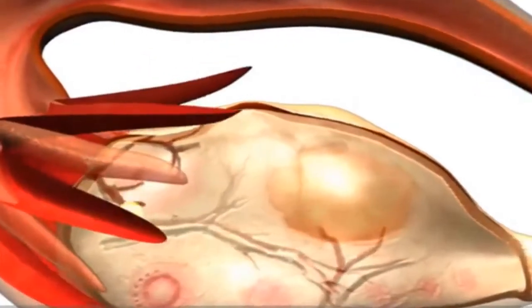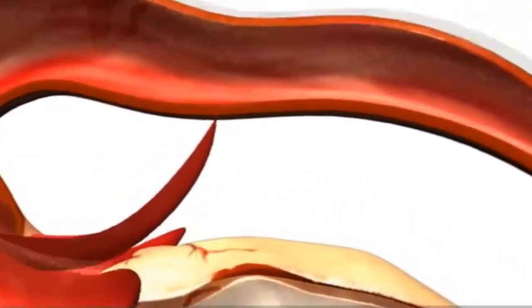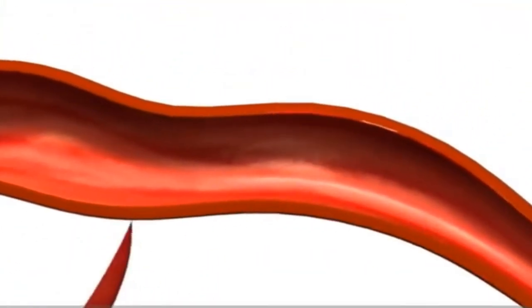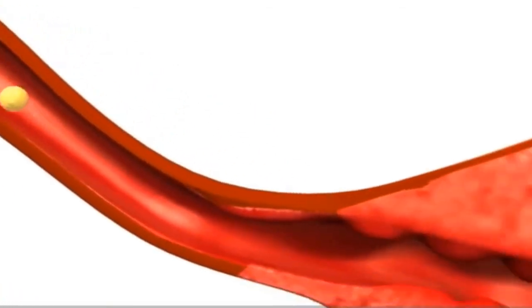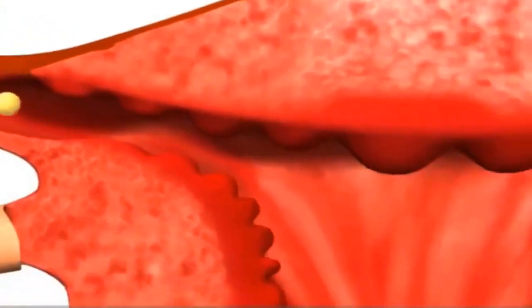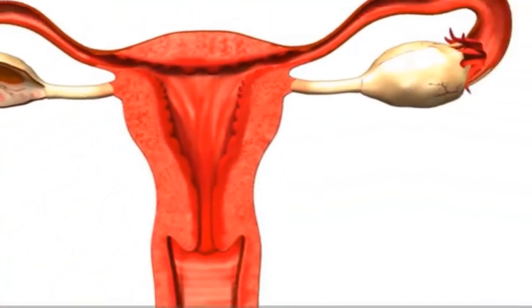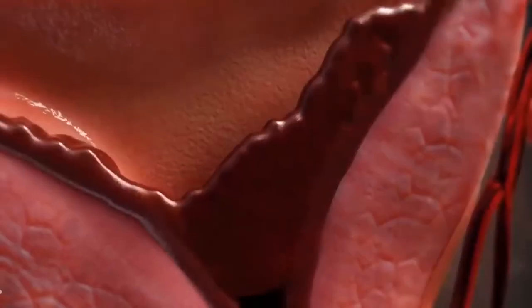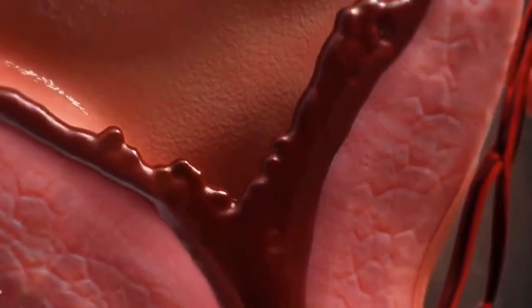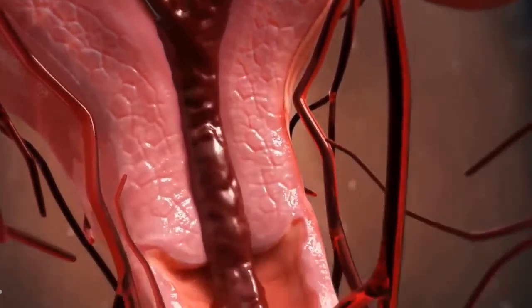If the egg is not fertilized, it breaks down and the level of hormones produced by the ovary begins to fall. This causes the lining of the uterus to also break down. Both the unfertilized egg and the lining of the uterus are then shed from the body via the vagina during menstruation — known as a period — and the cycle starts all over again.